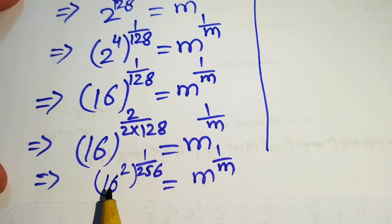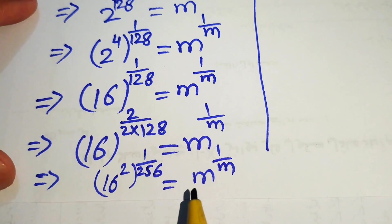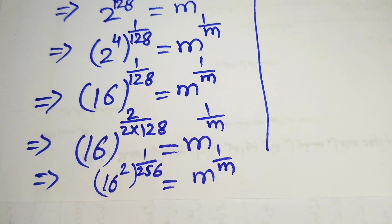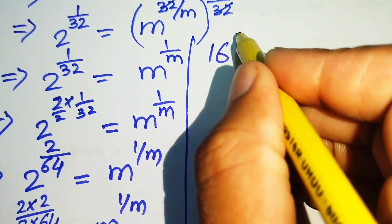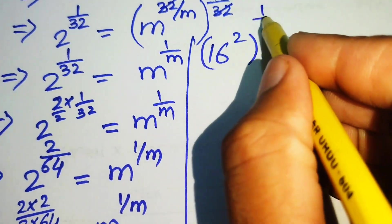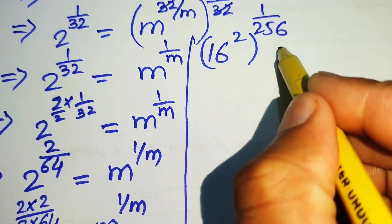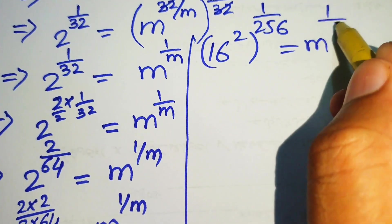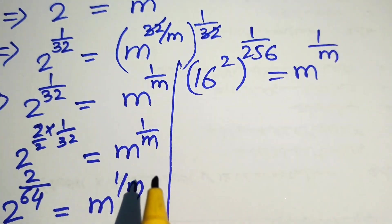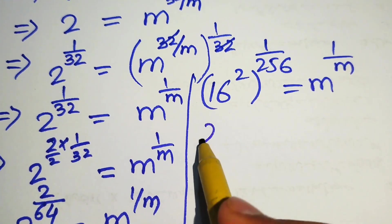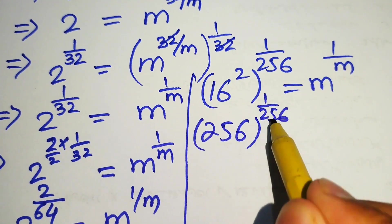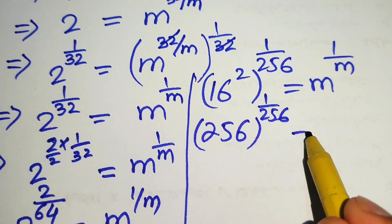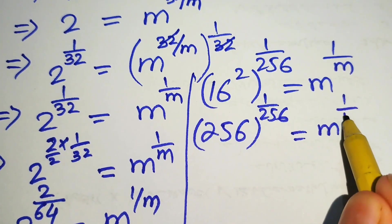We write 16 squared with whole power 1 over 256 equals m to the power of 1 over m. Since 16 squared equals 256, we obtain 256 to the power of 1 over 256 equals m to the power of 1 over m.